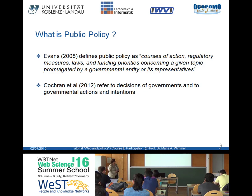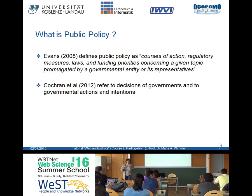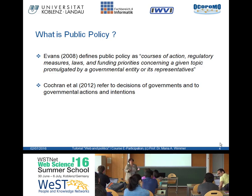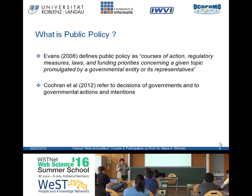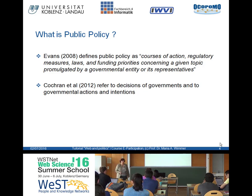Evans defines a public policy as a set of courses of actions, regulatory measures, laws, and funding priorities concerning a given topic promulgated by a governmental entity or its representatives. When we talk about policy at the political layer, we talk about strategy documents — a policy document that sets out courses of actions, regulatory agreements, and laws that regulate a specific area. If we want to change something, we need to affiliate resources: funding resources, but also human resources and capacities.